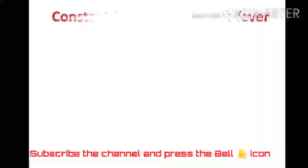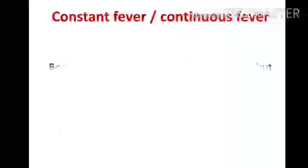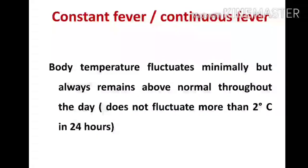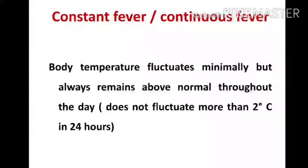The first type of fever is constant fever or continuous fever. Here the body temperature fluctuates minimally but always remains above normal throughout the day. The fluctuations are only minimum — it does not fluctuate more than two degrees Celsius in 24 hours. The temperature remains elevated throughout the day for a period of days or weeks.